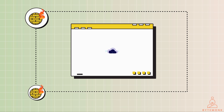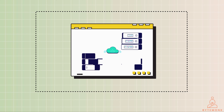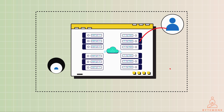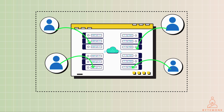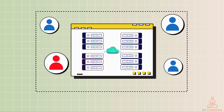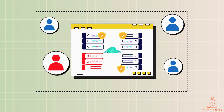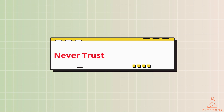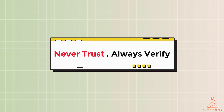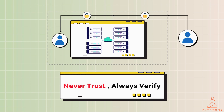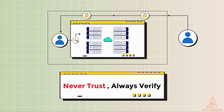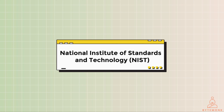With a ZTS model, the bank's internal systems would be segmented into smaller networks, each with its own set of security controls. Users would only be granted access to the networks and systems they need to do their jobs. Even if an attacker breaches one network, they would be unable to move laterally to other networks or access sensitive data. ZTS is based on the principle of 'never trust, always verify,' meaning all access requests — big or small — are fully authenticated, authorized, and encrypted before granting access, regardless of whether the request comes from inside or outside the network.